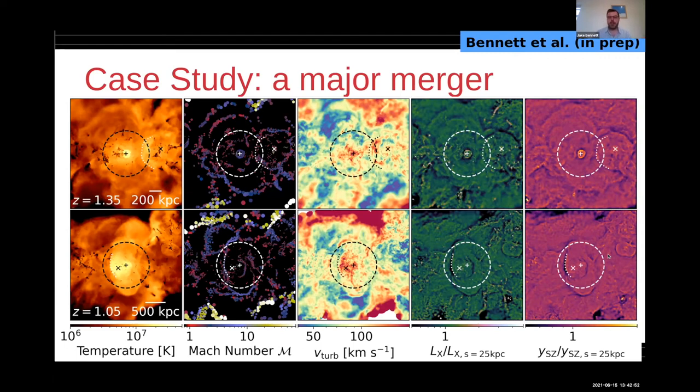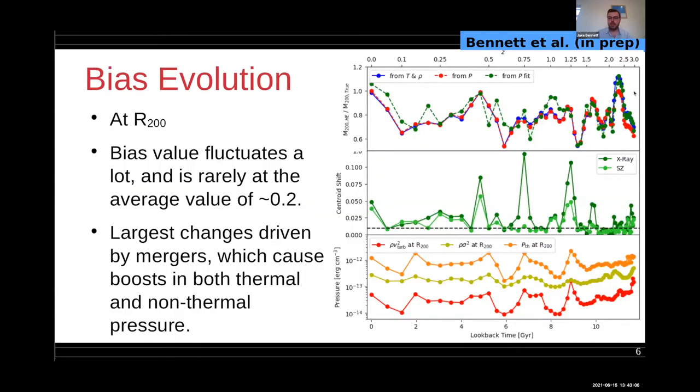If we actually look at how the bias evolves during this time, this is all at r200, so at the virial radius. As it progresses over time from redshift three down to redshift zero, the bias is up, down, up, down, all over the place. It's very rarely at the 20 percent that you'd say is the usual value people come out with. If you average over all time it's reasonable, but it's jumping about all over the place.